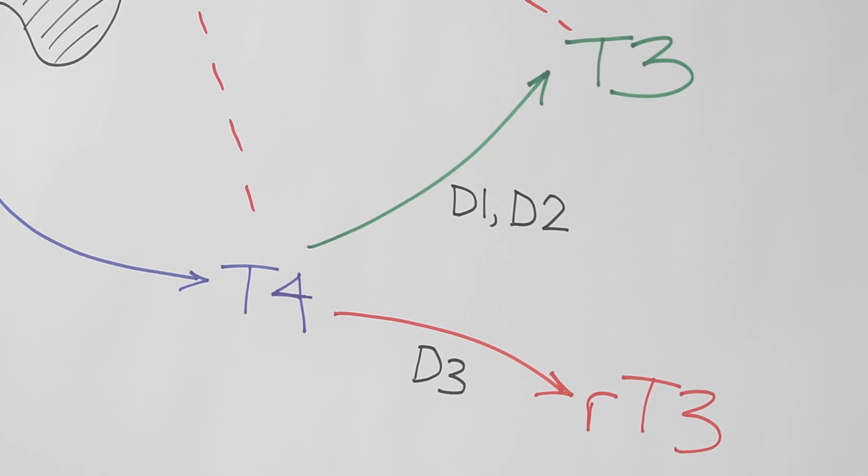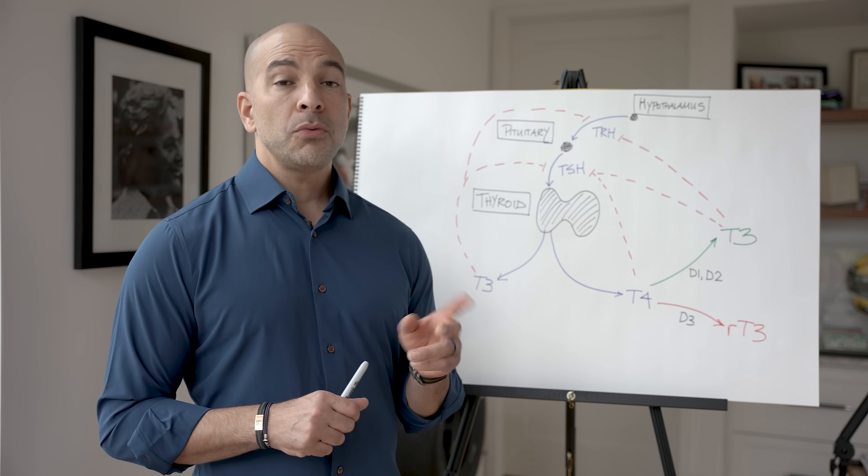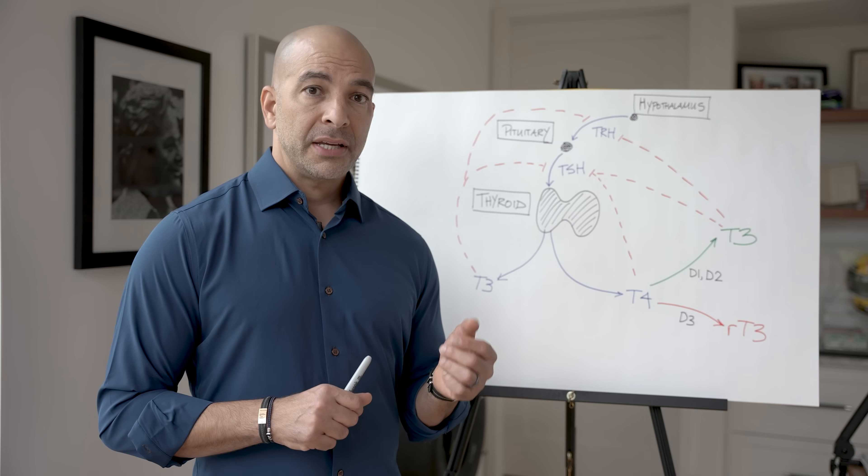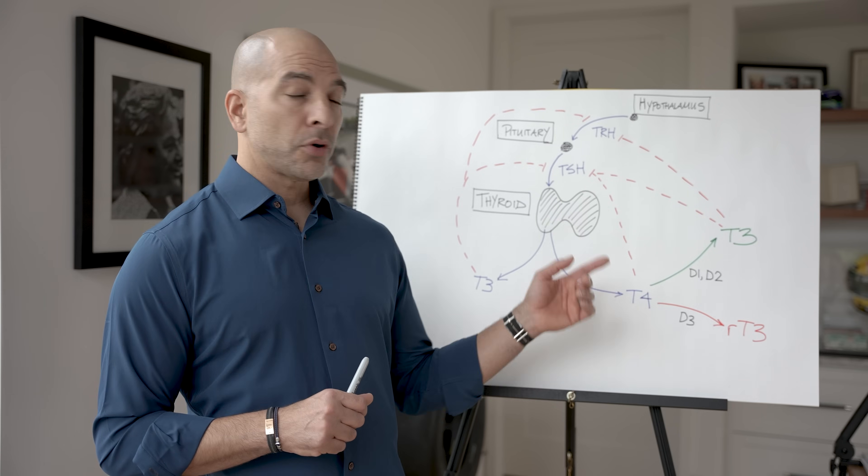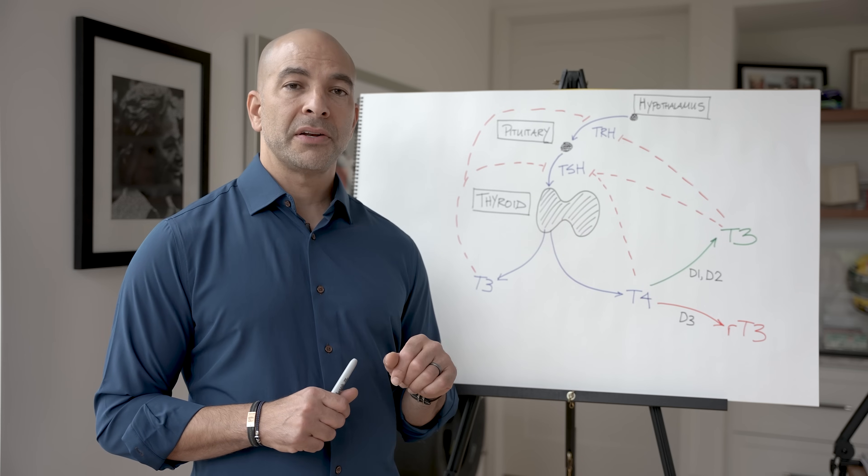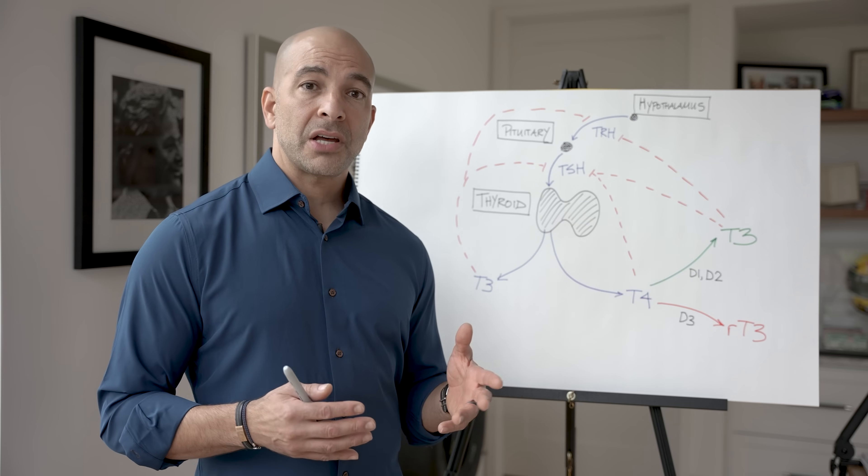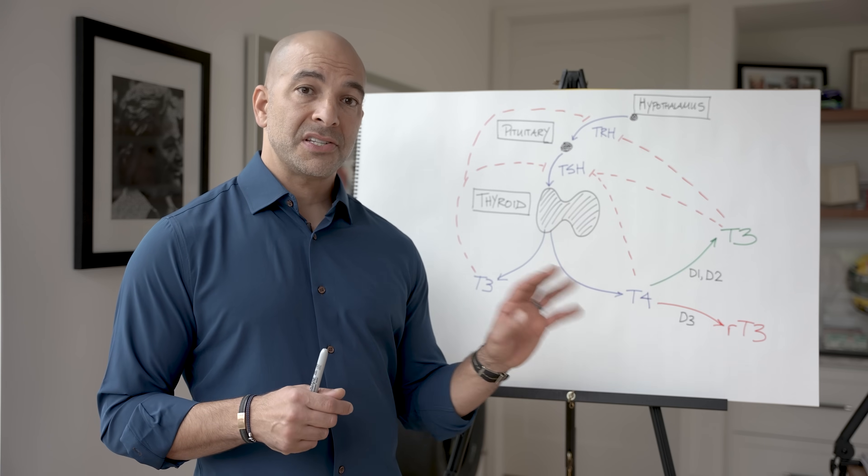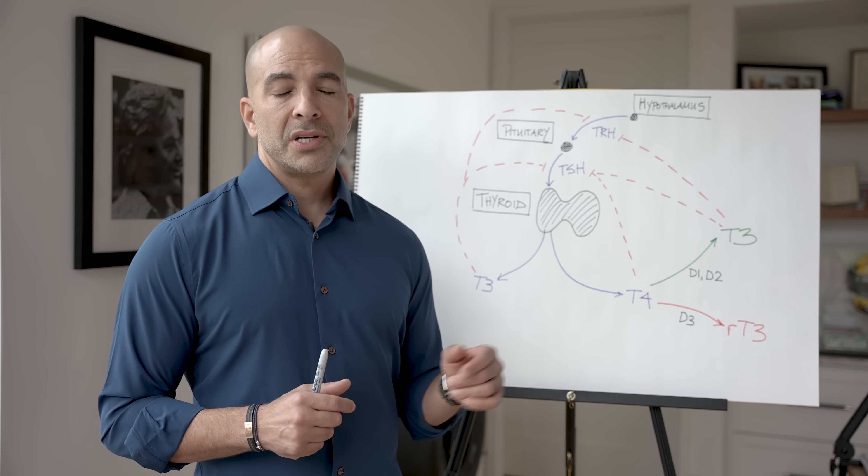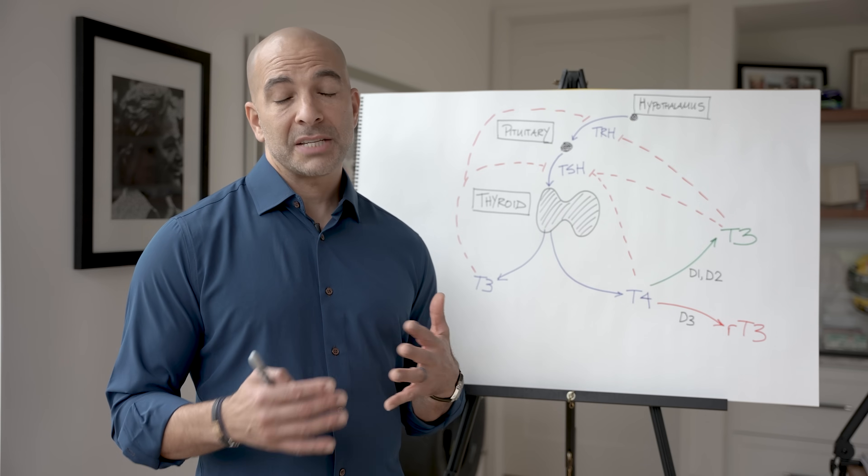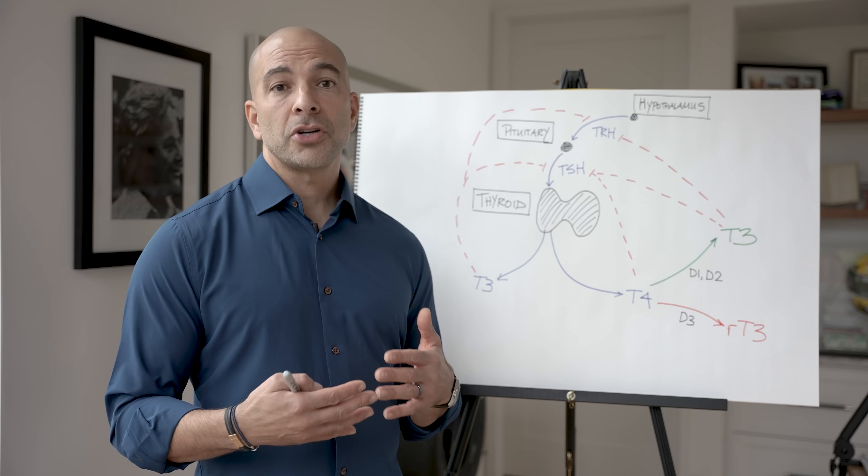So let's talk for a moment about these three deiodinases. D1 and D2 are quite similar in that they both convert T4 into T3. It's just where they do it that's slightly different. D1 is extracellular, on the cell membrane facing outward, whereas D2 is on the membrane of the endoplasmic reticulum, facing internal to the cytosol.